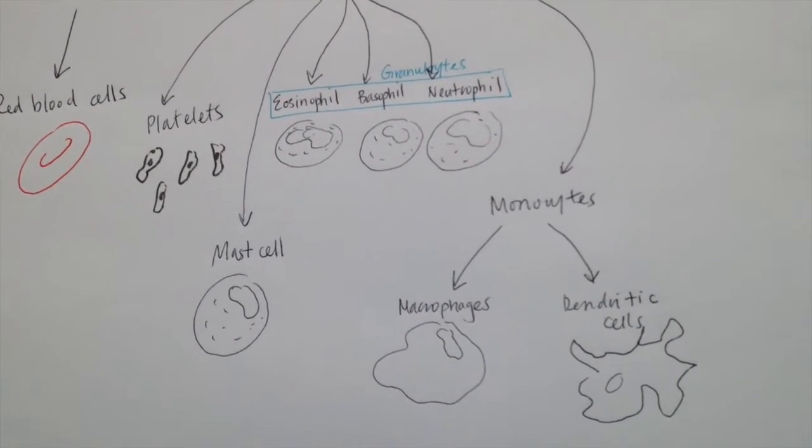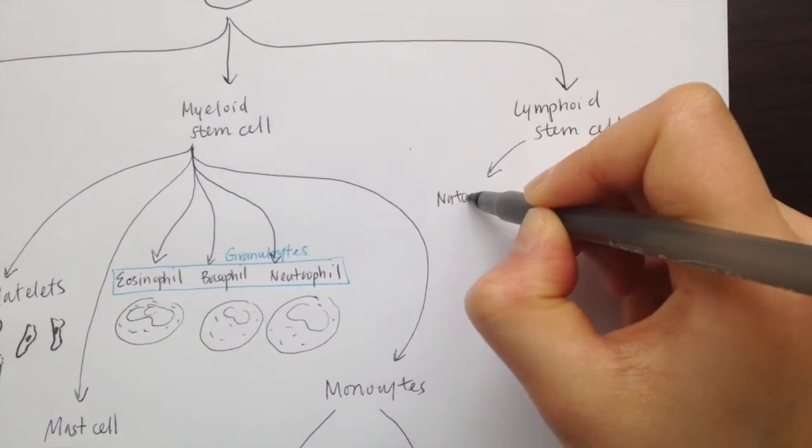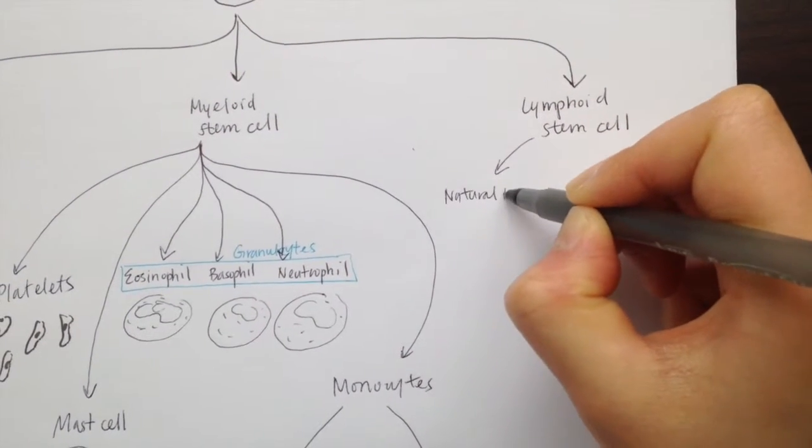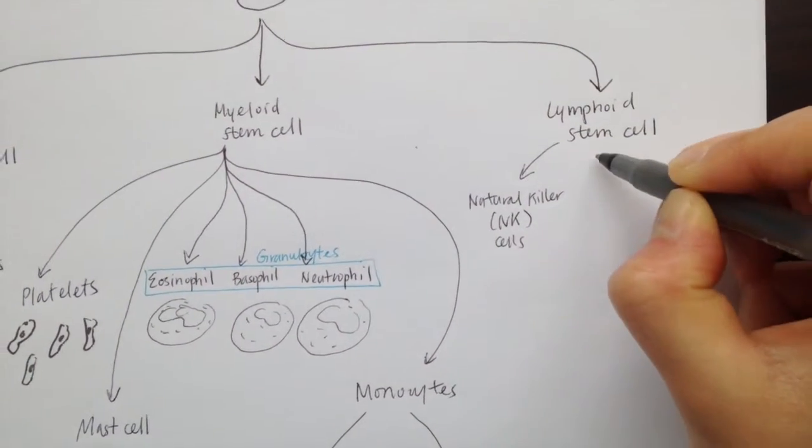From the lymphoid stem cells, natural killer cells will arise. They're part of the innate immunity and not the specific immunity of our immune system. They do not form memory cells, but they do destroy pathogens.